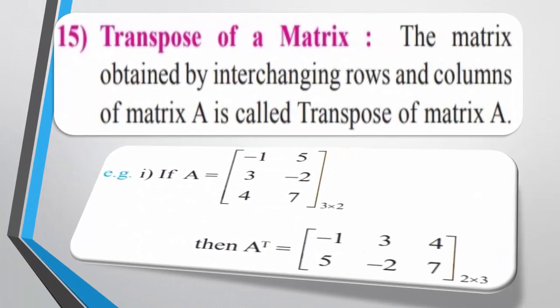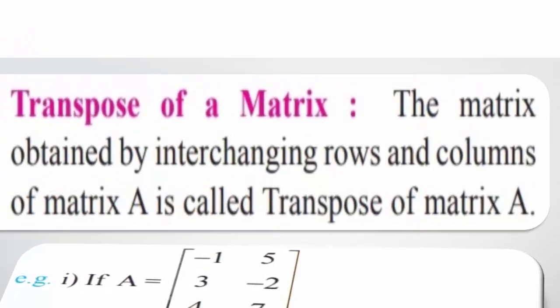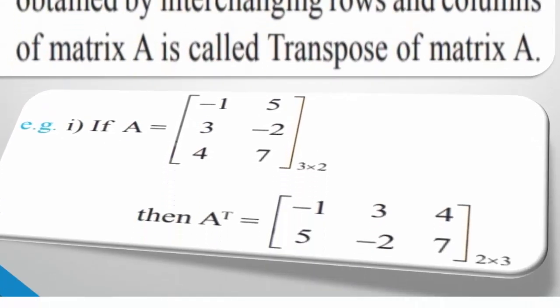Transpose of a matrix: The matrix obtained by interchanging rows and columns of a matrix is known as the transpose. For example, if A is a matrix of order 3 by 2, then after interchanging rows and columns, A transpose has order 2 by 3. The rows become columns and the columns become rows. One important property is that the transpose of the transpose of A equals the original matrix A.